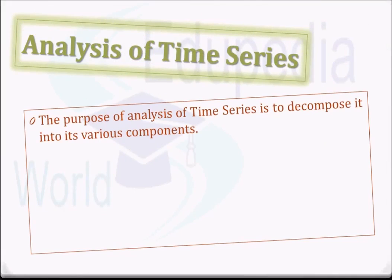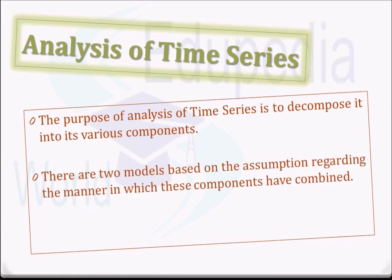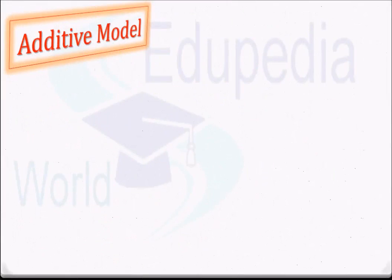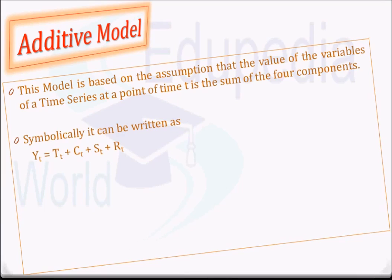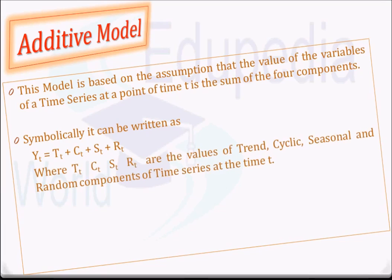The purpose of time series analysis is to decompose it into its various components. There are two models based on assumptions about how these components combine. The additive model assumes that the value of the variable at time T is the sum of the four components: Y_T = T_T + C_T + S_T + R_T, where T_T, C_T, S_T, and R_T are the trend, cyclic, seasonal, and random components at time T.